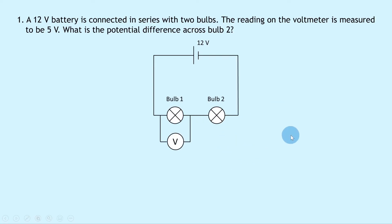To answer this question we need to know what the circuit rule is for potential difference or voltage in a series circuit. In a series circuit, the sum of the voltage across each component is equal to the voltage of the supply. So the voltage across bulb one and bulb two must add up to give the voltage across the battery which is 12 volts.